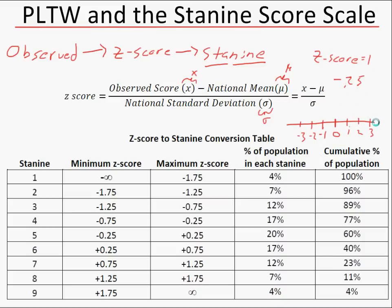Z-scores are useful in and among themselves, however it's difficult to give a student a score of zero or a negative value on a test — that's why we convert them into stanine scores. The way we go from a z-score to a stanine is we divide the z-scores into buckets. The lowest performing students are in the 1s, 2s, and 3s; average students in the 4s, 5s, and 6s; and the highest performing in the 7s, 8s, and 9s.